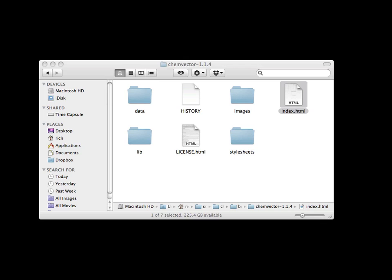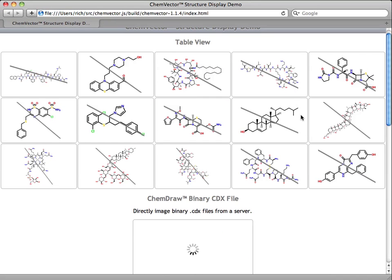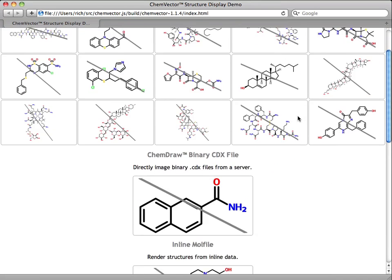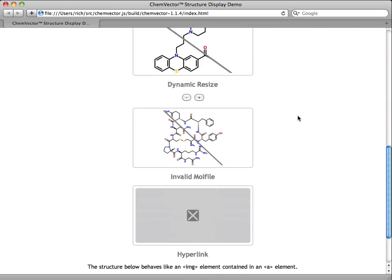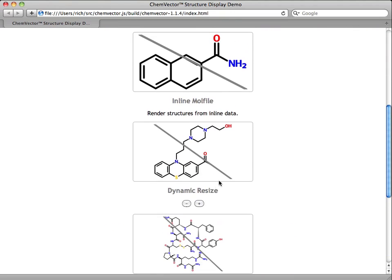Next, unpack the distribution. Contained within the root directory is a test page. This page shows all of ChemVector's features in one place. The diagonal lines over the structure images are a watermark that disappears when a paid license file is applied.